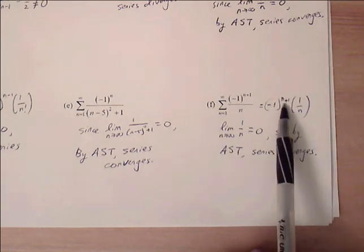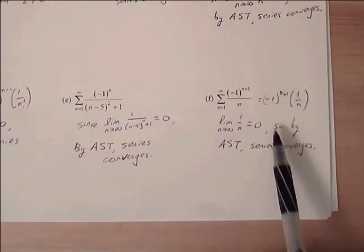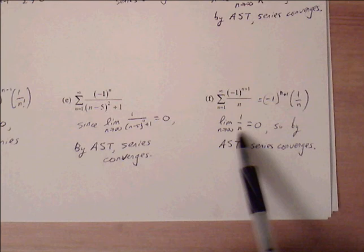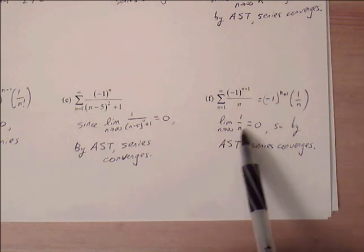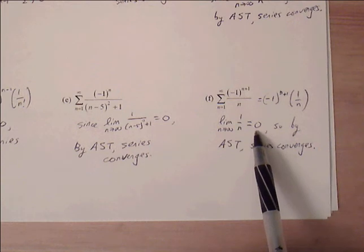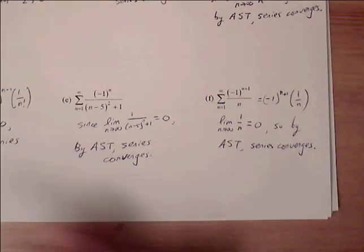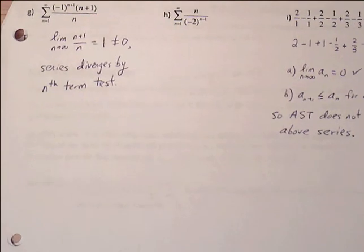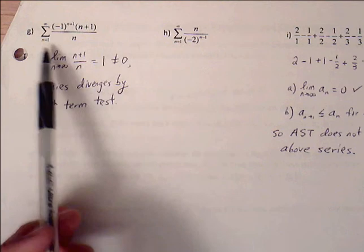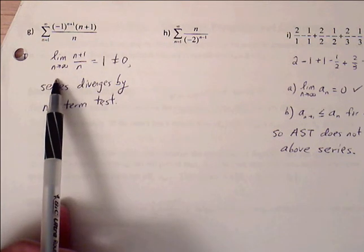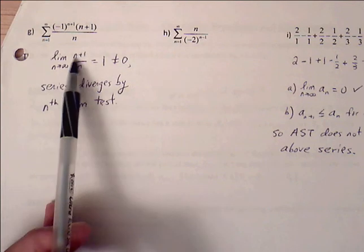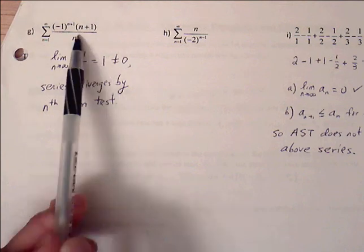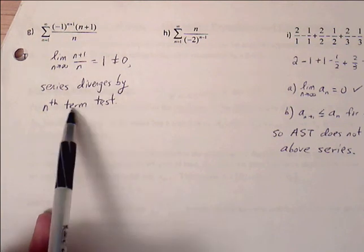Example f is (-1)^(n+1) · (1/n), which is the same as example c. The limit of 1/n as n approaches infinity is 0, so the series converges by the alternating series test. Looking at one more example: the limit as n approaches infinity of (n+1)/n equals 1, which does not equal 0, so that series diverges by the nth term test.